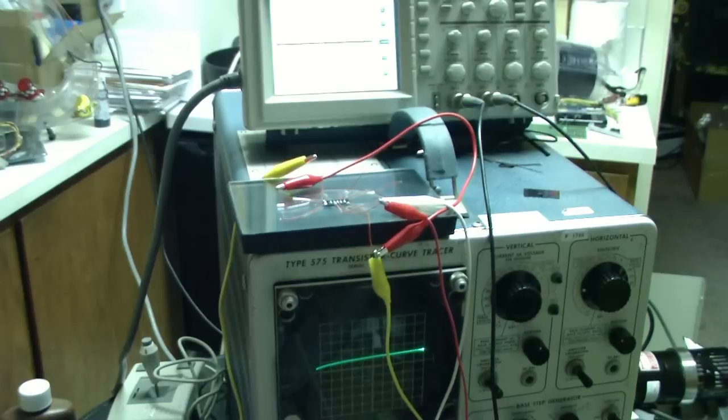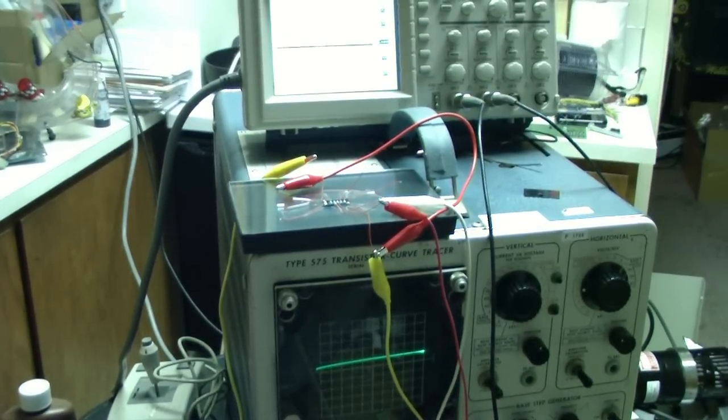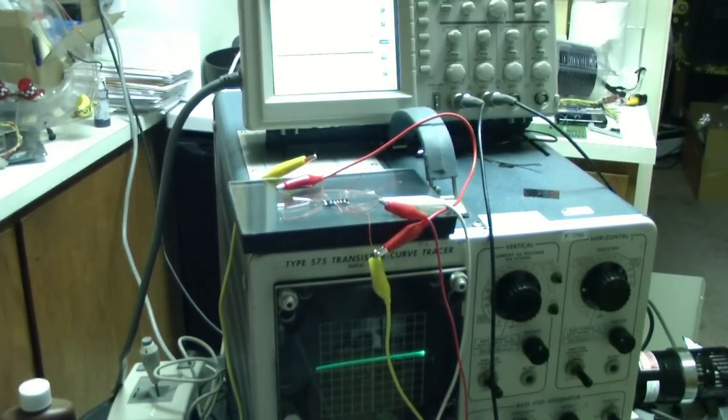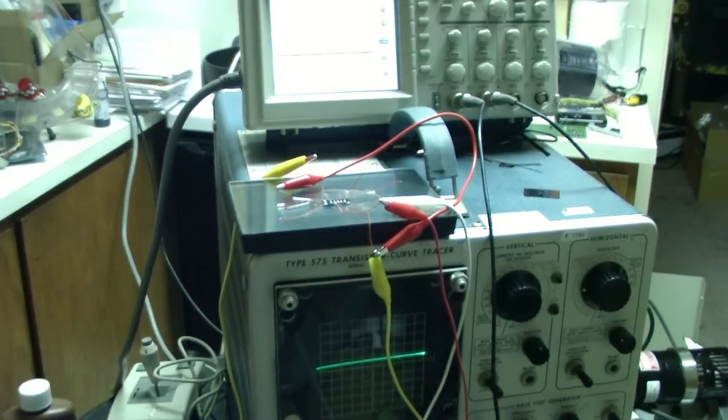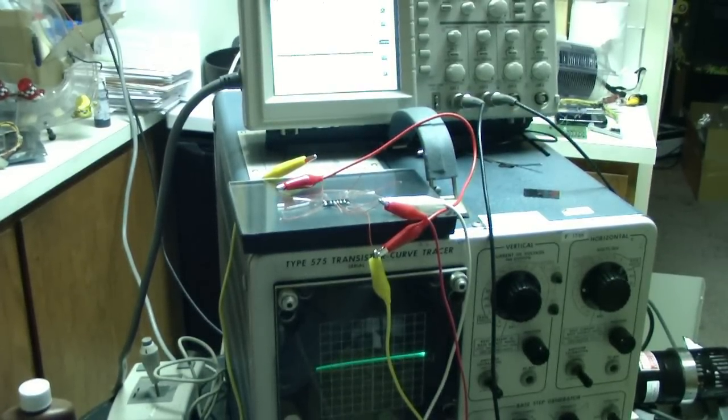So I'm going to run the gate negative. So I'm running the gate negative, a couple volts negative up there, and now my transistor is mostly off.